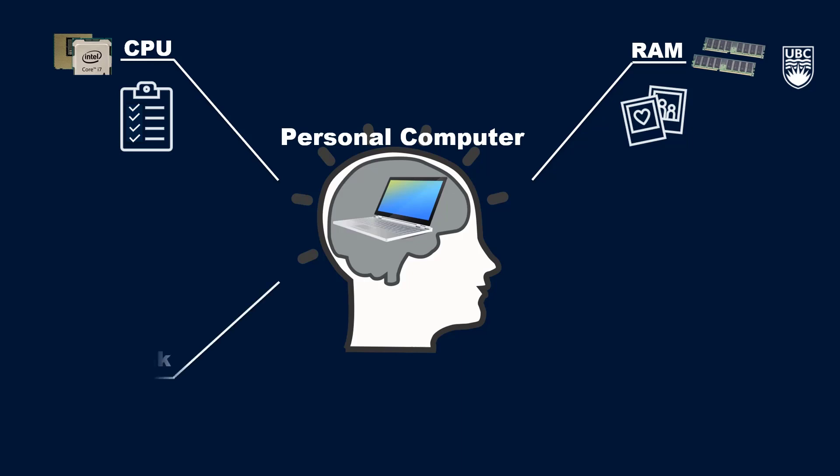In addition to RAM, your computer also has a hard disk drive for the longer-term storage of data and files. Unlike RAM, which will lose all its information when your computer is turned off or restarted, your computer's disk storage is long-term and will retain files until they're deleted or there's a hardware failure.